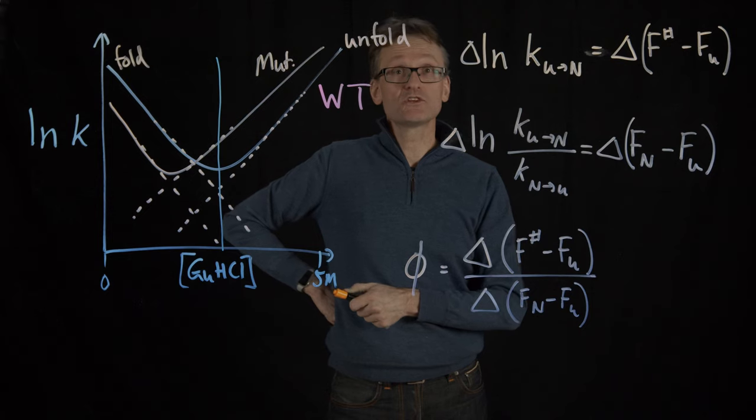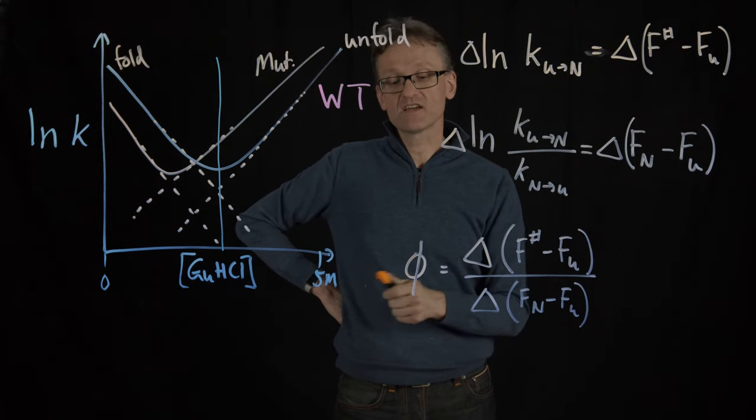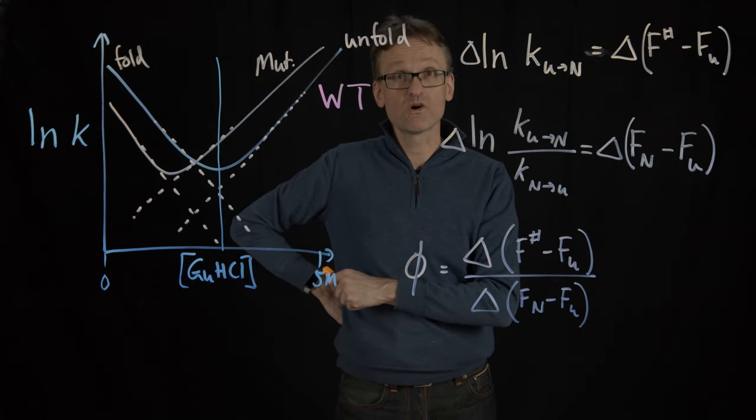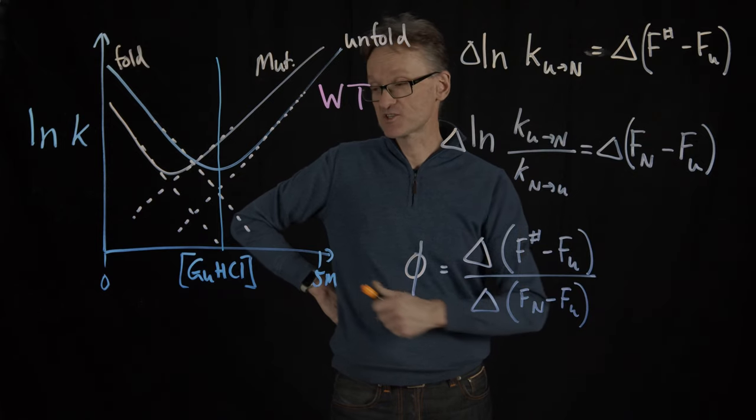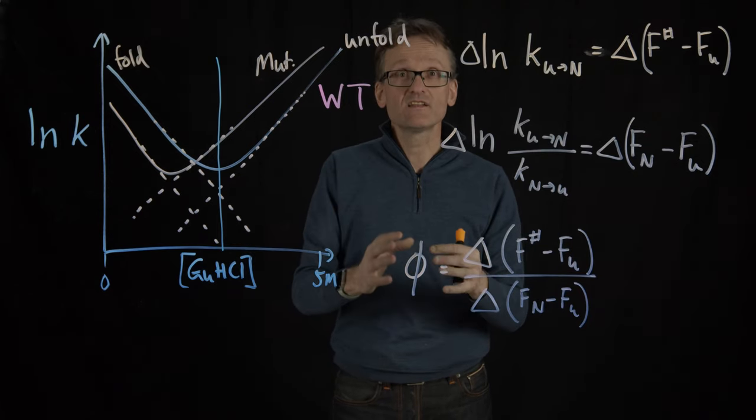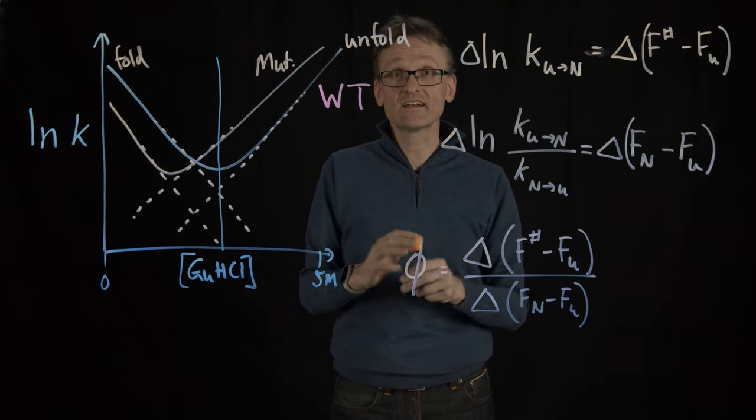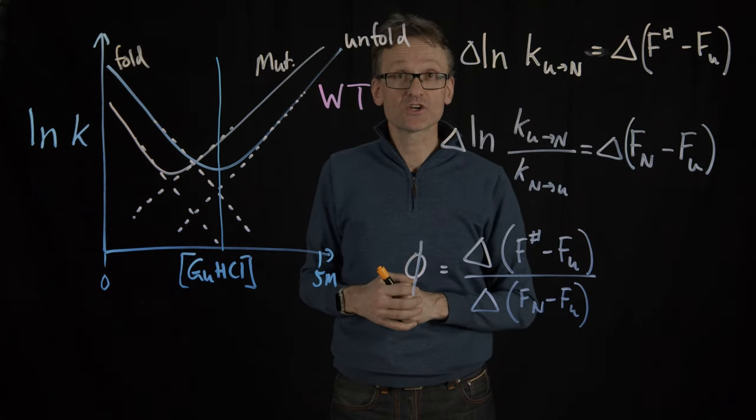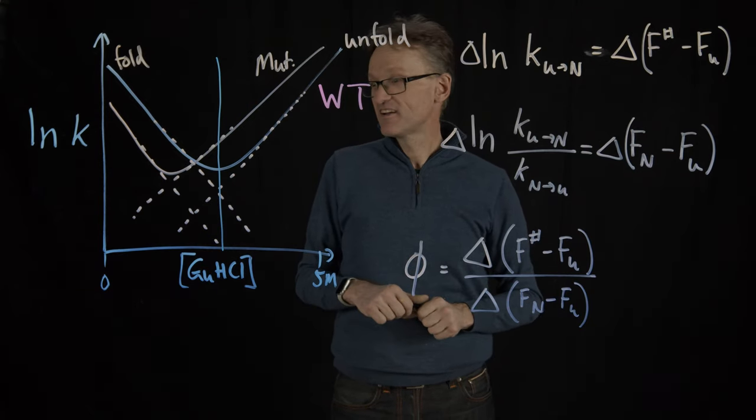If the phi value is zero, I'm not part of the transition state. If the phi value for my residue is one, I am part of the transition state. Now we can identify transition states indirectly without really having their structure and compare that to models. That's super cool.